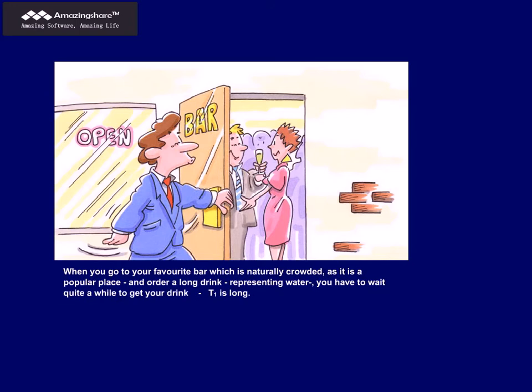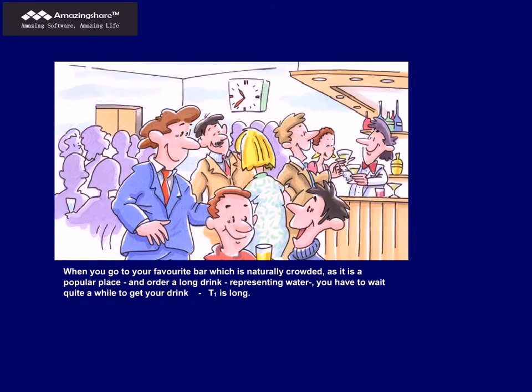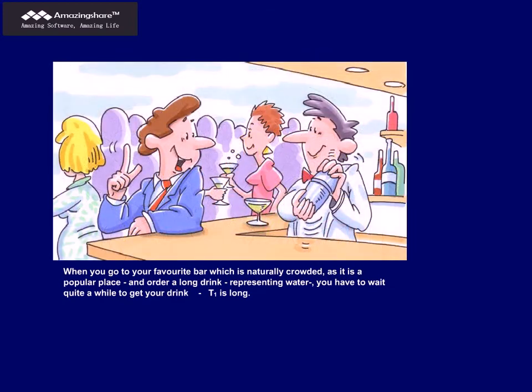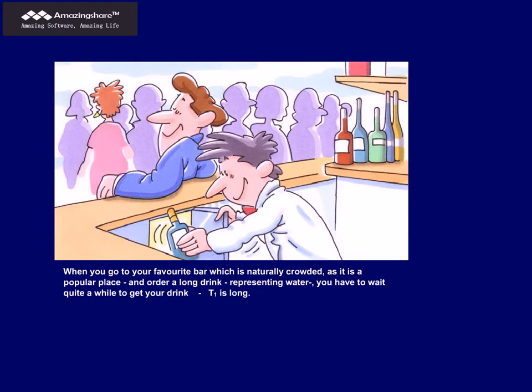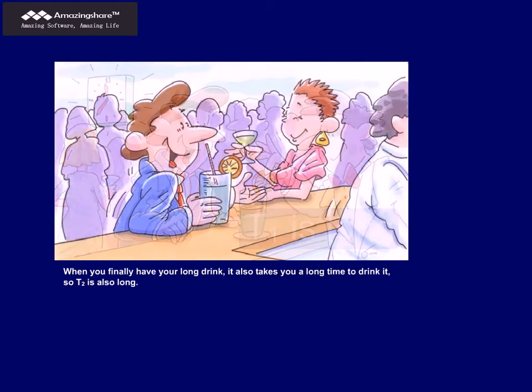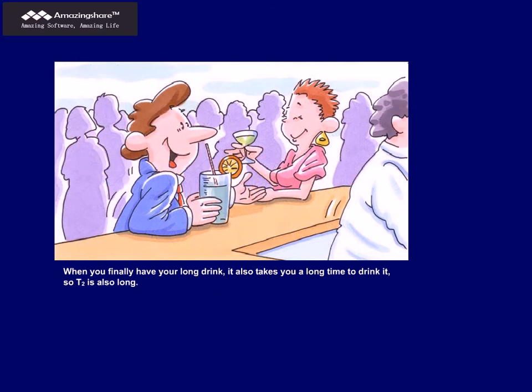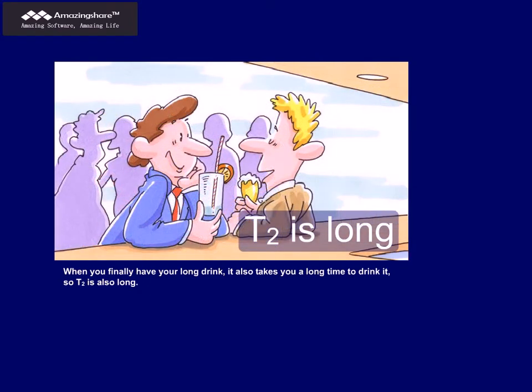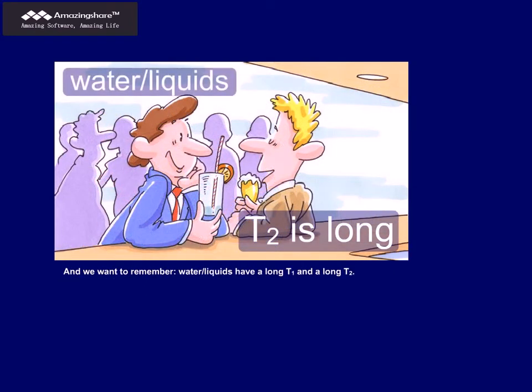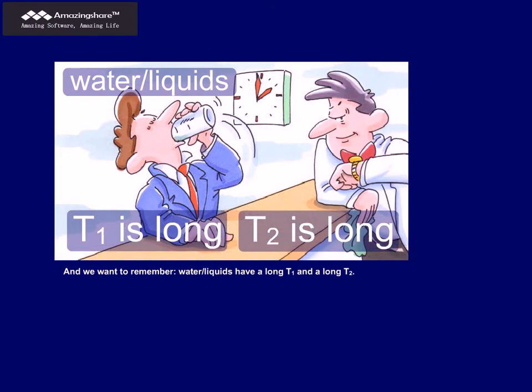When you go to your favourite bar, which is naturally crowded, as it's a popular place, and order a long drink, representing water, you have to wait quite a while to get your drink. T1 is long. When you finally have your long drink, it also takes you a long time to drink it. So, T2 is also long. And we want to remember, water and liquids have a long T1 and a long T2.